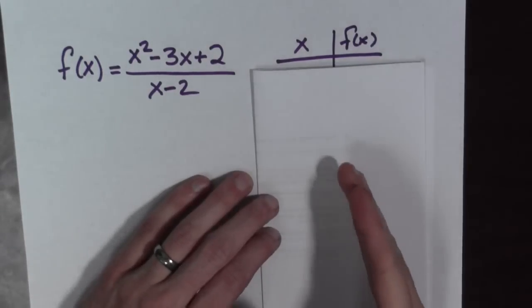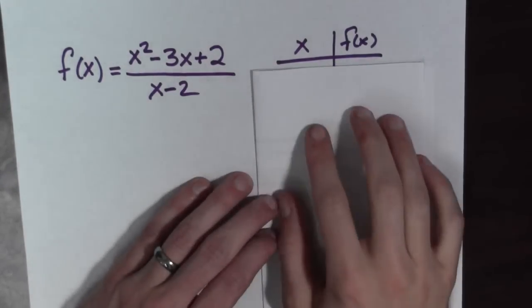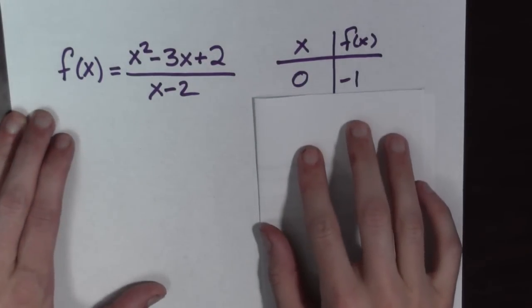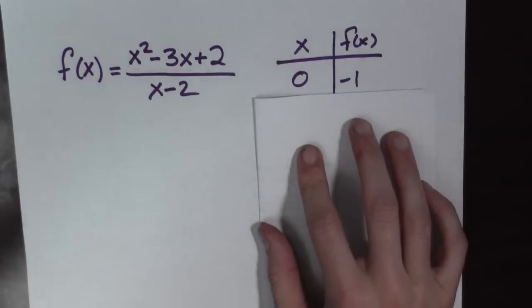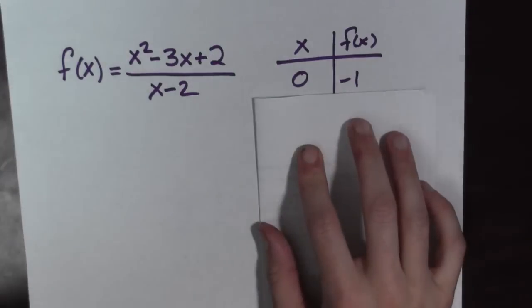So, to really understand this, we should write this down and plug in some values. Let's say we plug in zero. That's the easiest one to plug in. We plug in zero, we get negative one out. Okay, that's great.